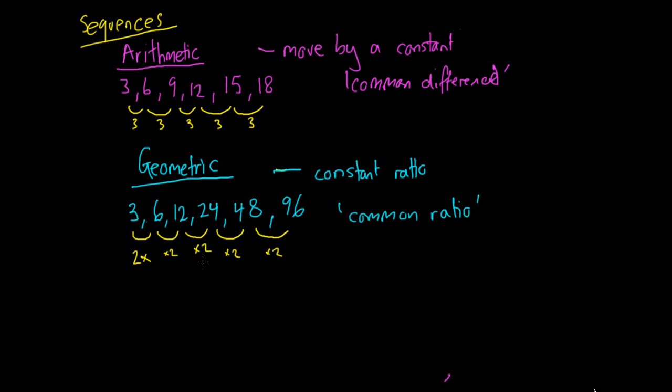So geometric sequences, we're always scaling up by, say, a factor of 2. And for an arithmetic sequence, we're always moving up by a constant.